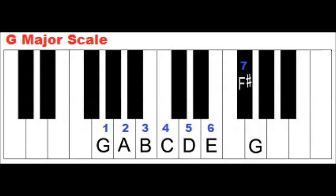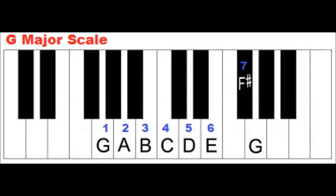Primary chords in a major key are based on the 1st, 4th and 5th notes of the major scale. The notes of the G major scale are G, A, B, C, D, E and F sharp.